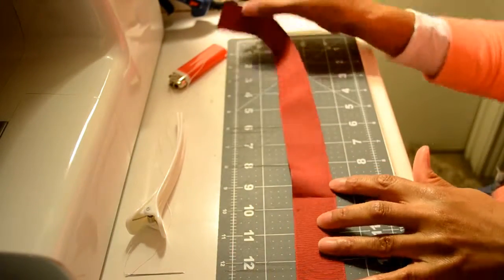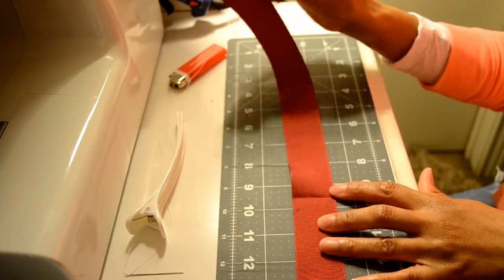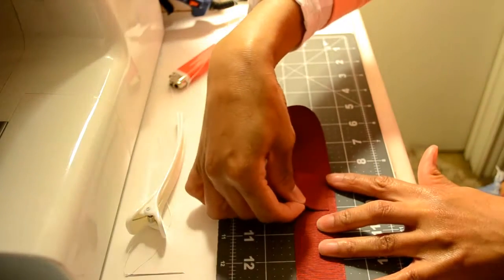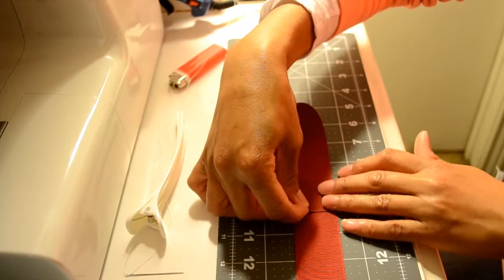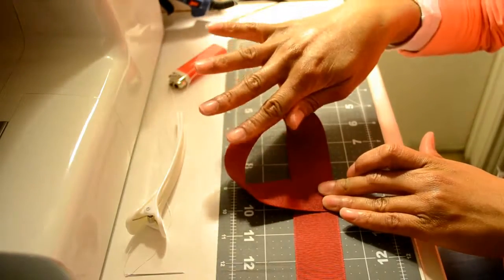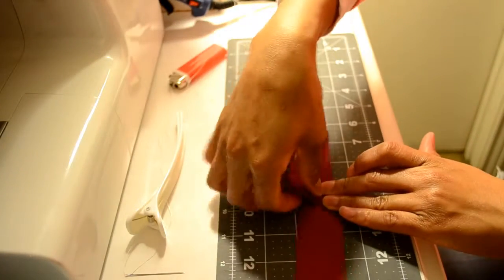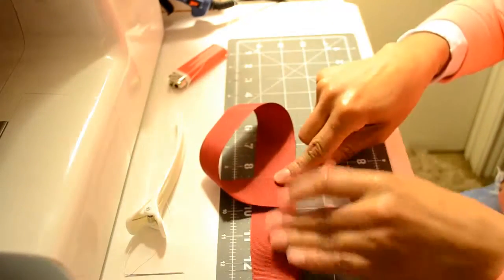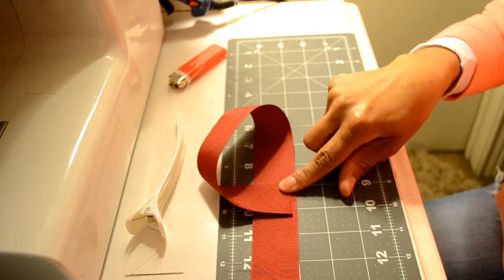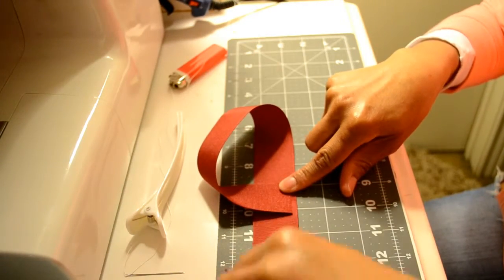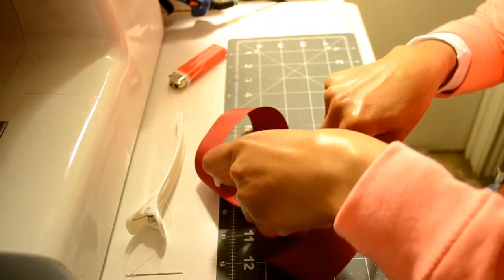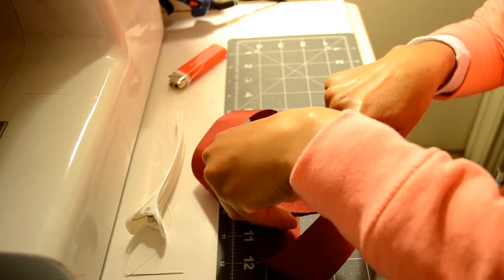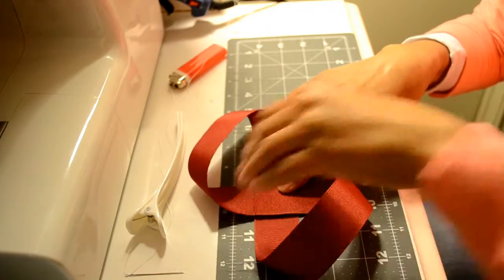Next, you're going to want to bring this side of the ribbon and loop it over the crease, so you have a loop that looks like that. Next, you're going to bring the other side of your ribbon and loop it under, like so.